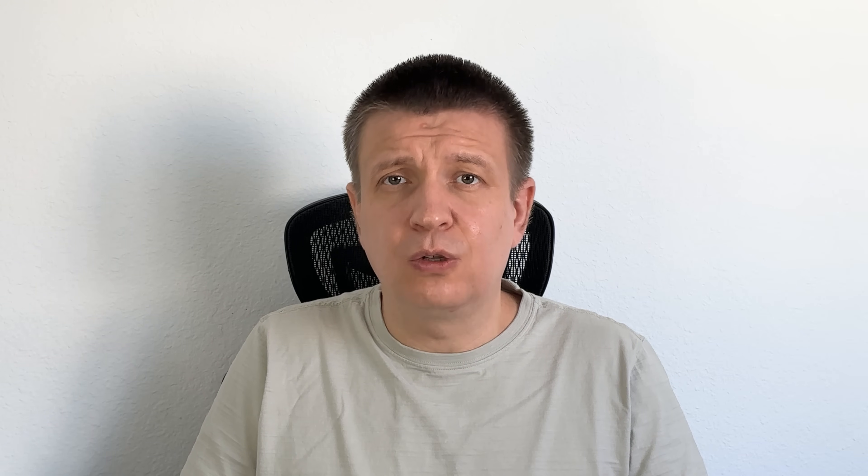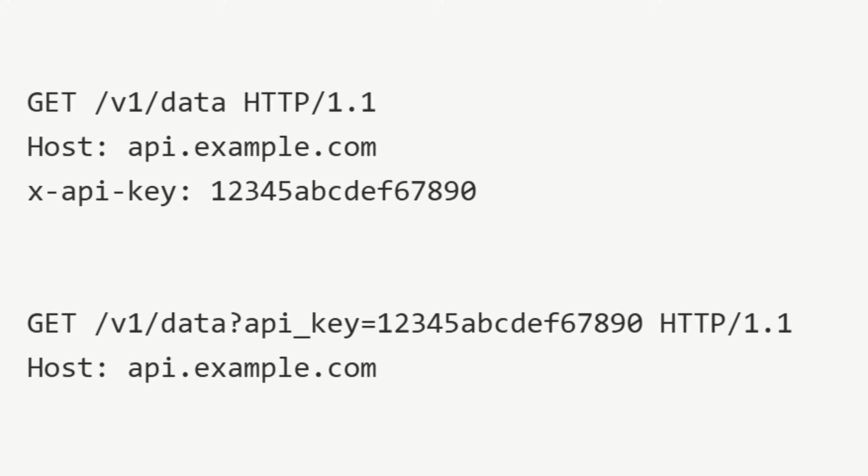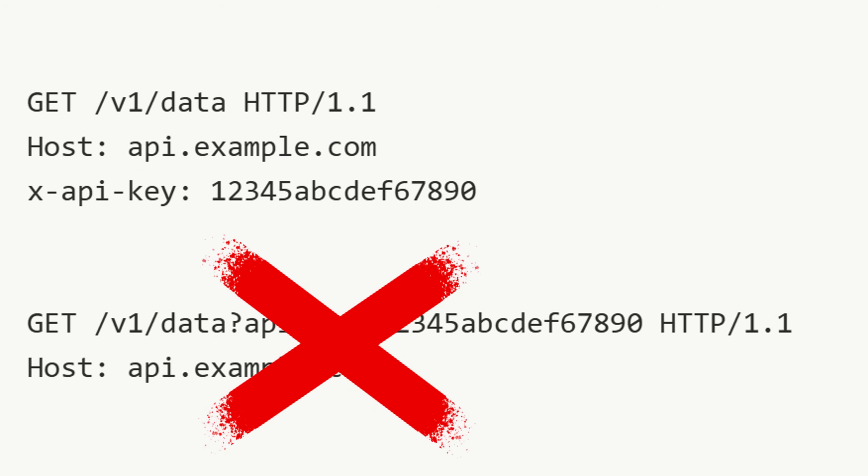To solve the issue of rotating credentials that Basic Auth has, you can use API key authentication. An API key is a long random string that identifies the client. It's usually sent in a header like X-API-Key or as a query parameter — though sending it as a query parameter is not very secure, so always use the header. The server looks up the API key in its database or config and checks if it's active and what permissions it has. If valid, the request is processed. The pros include the fact that it is easy to issue and rotate without changing a username or password, and it lets you track and throttle usage per client.